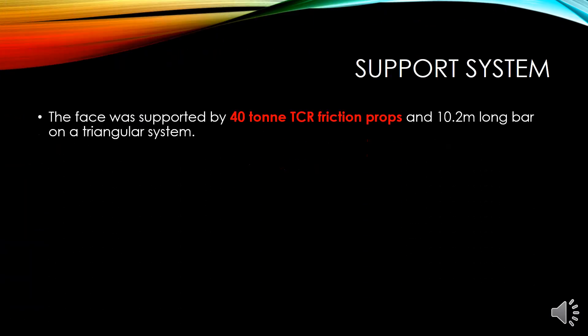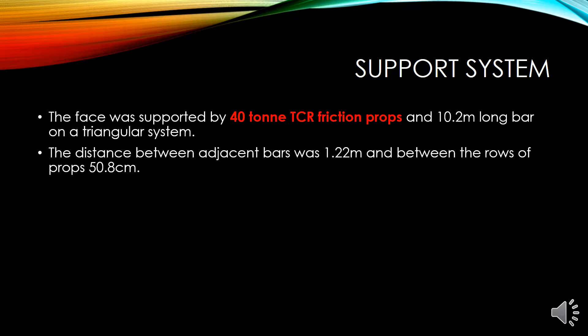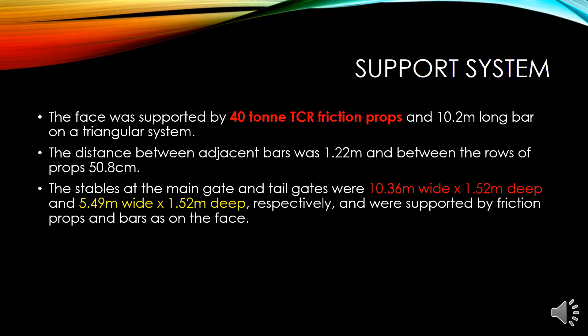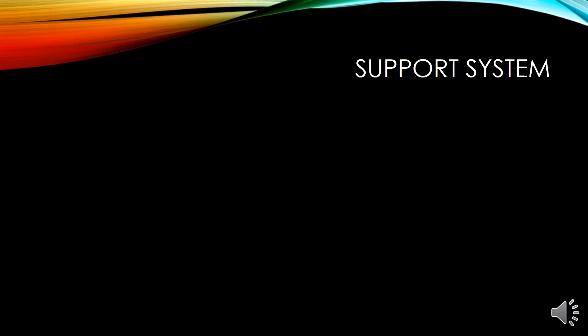The support system used 40-ton TRC friction props and 10.2 m long bars on a triangular system for face support. The distance between adjacent bars was 1.22 m and between rows of friction props was 50.8 cm. The main gate was 10.36 m wide and 1.52 m deep, and the tailgate was 5.49 m wide and 1.52 m deep. Both were supported systematically up to 20 m distance by steel joist crossbars placed on steel supports. The support system layout is shown in the figure.